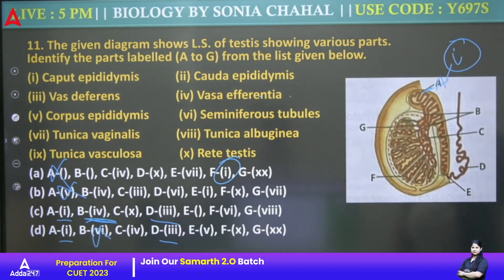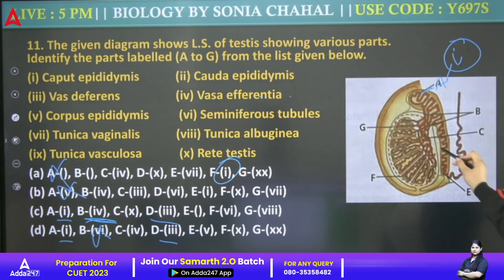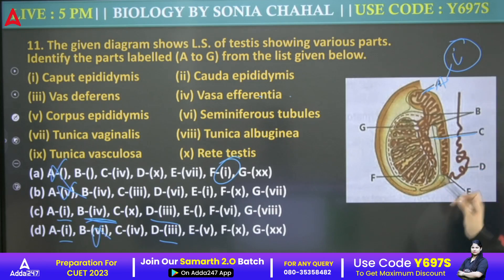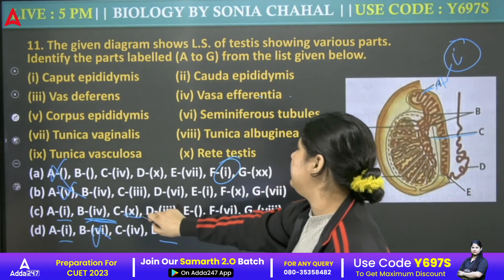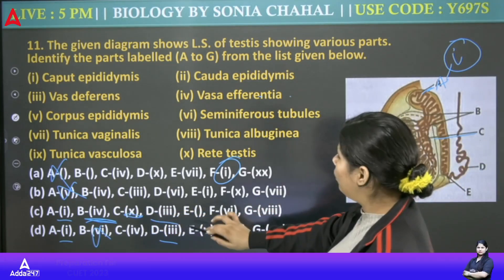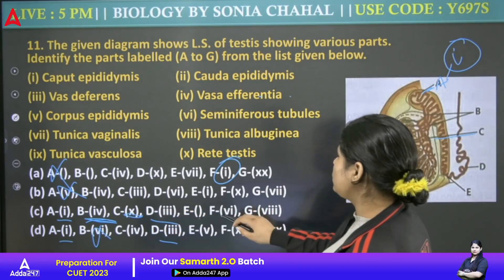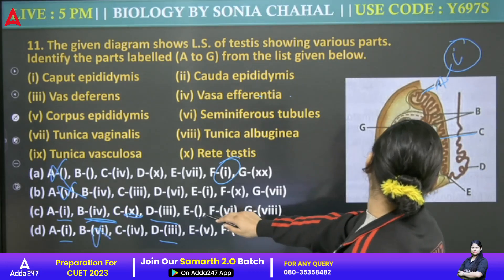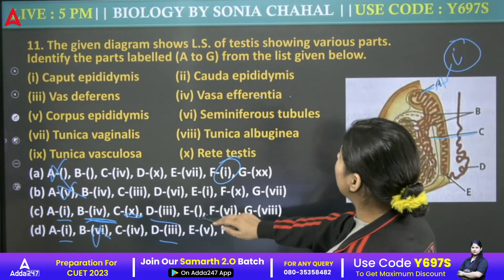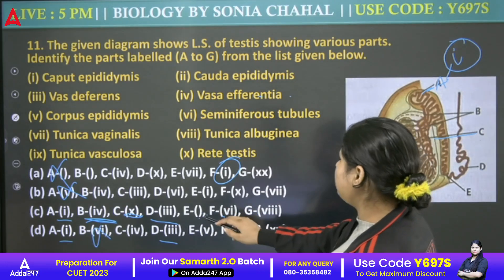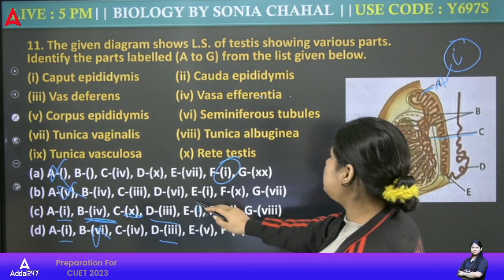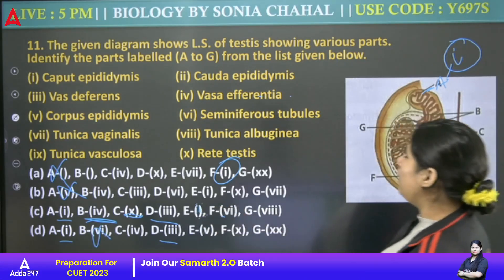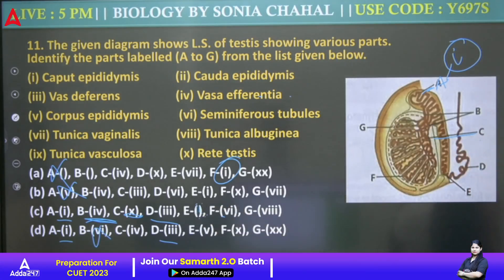C is rete testis — C is rete testis and it is correct. C is rete testis. D is done. E — let's talk about E: it is second. F is 4th.